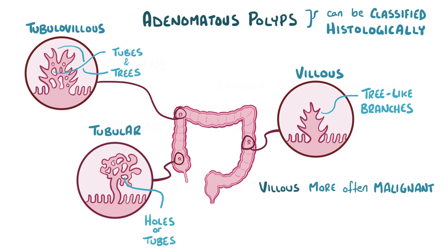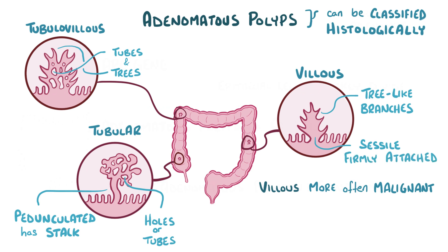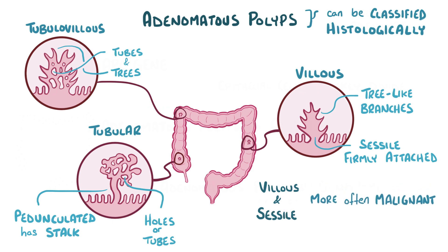Another classification is based on whether the adenomatous polyp is pedunculated, which means that it's attached to the colon wall by a stalk and therefore able to swing around freely, or sessile, which means that it's firmly attached to the colon wall by its base. Sessile adenomatous polyps are more likely to become malignant.